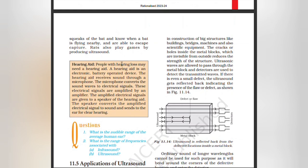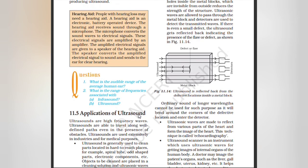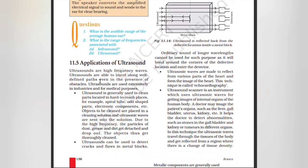Hearing aid: People with hearing loss may need a hearing aid. A hearing aid is an electronic, battery-operated device. The hearing aid receives sound through a microphone. The microphone converts the sound into electrical signals. These electrical signals are amplified by an amplifier. The amplified electrical signals are given to a speaker in the hearing aid. The speaker converts the amplified electrical signal to sound and sends it to the ear for clear hearing.